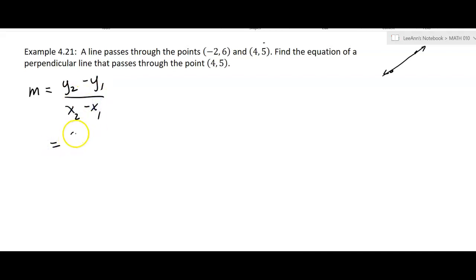So it's going to be 5 minus 6 over 4 minus a negative 2. And that's going to be negative 1 over 6. So that's going to be the slope for this line here, the slope that we don't have a graph of or anything or an equation, but we know the slope is negative 1 sixth. We want a line perpendicular to that line.